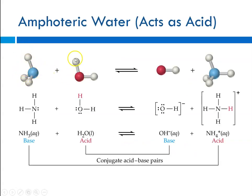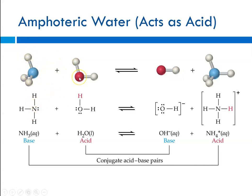Here we see ammonia being added to water, forming the hydroxide ion and the ammonium ion. In this case water is acting as a proton donor, donating that proton to ammonia. Ammonia goes from NH3 to NH4+, and water goes from H2O to OH-. So ammonia is acting as a base, and water is acting as an acid. Ammonia and the ammonium ion form a base/conjugate acid pair, and water acting as an acid gives the hydroxide ion as its conjugate base.